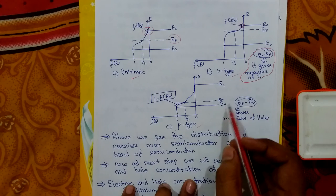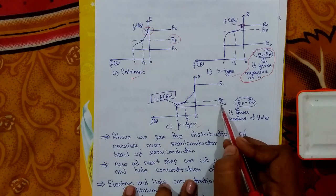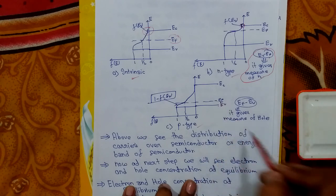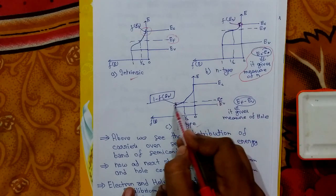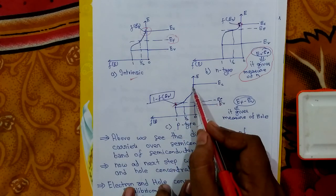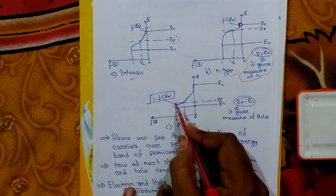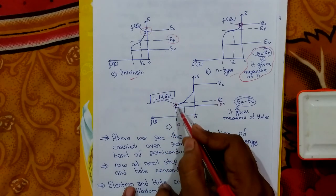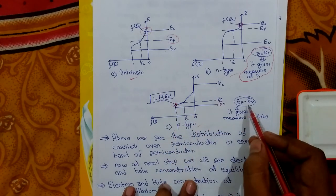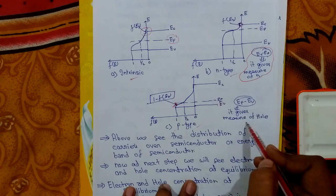For p-type semiconductors, the Fermi level is closer to EV, the valence band energy level, and holes are present there. If electrons are present there, their probability is F(EV), and the hole probability equals 1 − F(EV). The quantity EF − EV gives the measure of hole concentration.